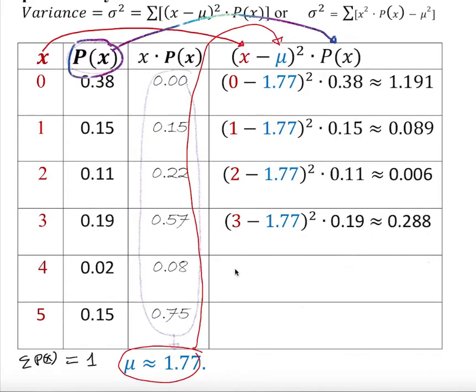And same thing for 4 minus 1.77 squared times 0.02. And approximately this is going to give me 0.099. And finally we have 5 minus 1.77 square times 0.15 is going to approximately give us 1.565.